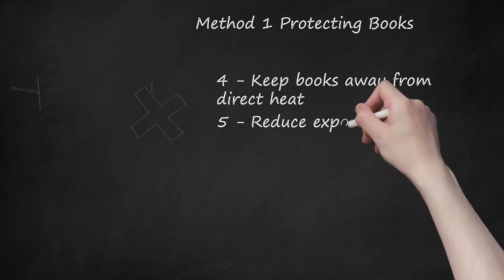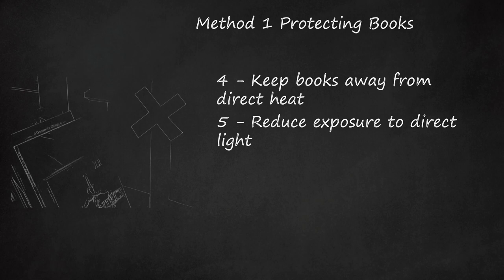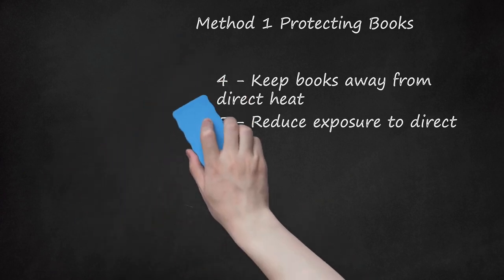Reduce exposure to direct light. Soft room lighting won't affect the quality of books much, but hard, direct sunlight will always serve to bleach out and damage the binding and the page quality of books. Rooms in which books are kept should be shady, with drapes over the windows to protect the books.